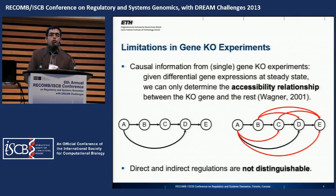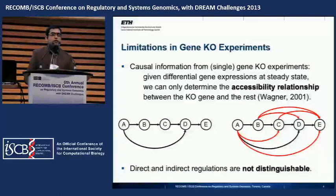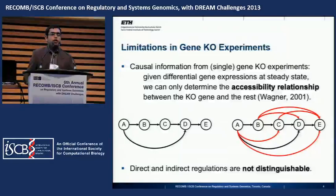If one has a complete set of single gene knockout experiments with differential gene expression data, one can get the accessibility relationship, or the transitive closure of this matrix. With a complete set of double gene knockouts and steady-state differential expression data, we can get the accessibility matrices for the gene regulatory network where each gene has been removed one at a time. This is the fundamental limitation; however, in real cases there might be errors in the accessibility relationship.